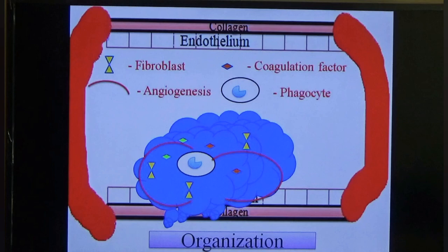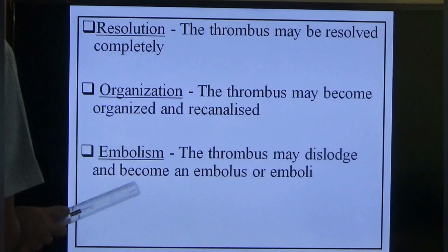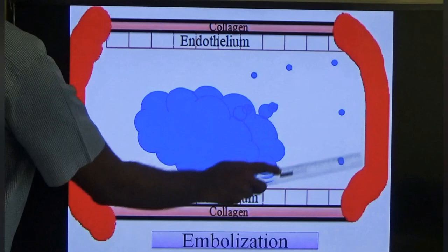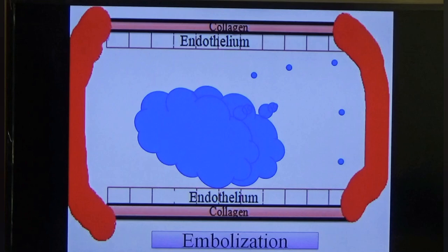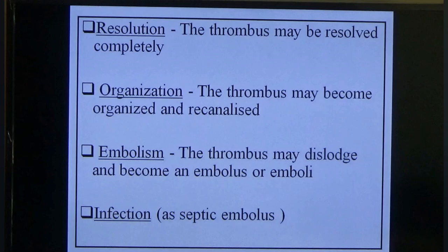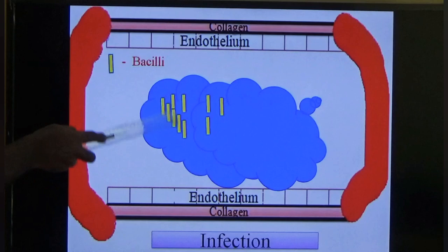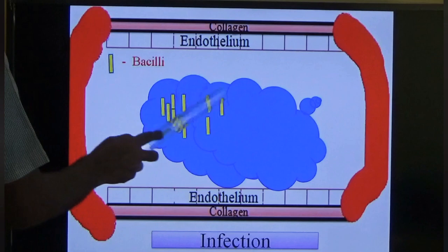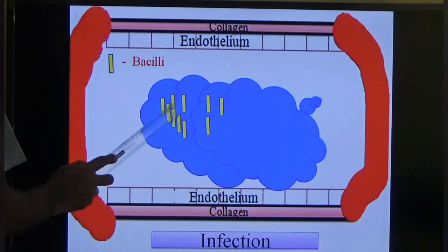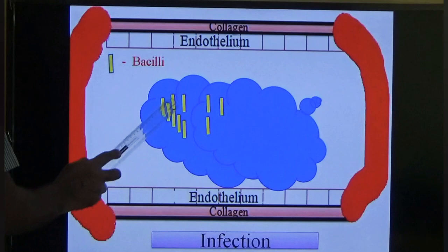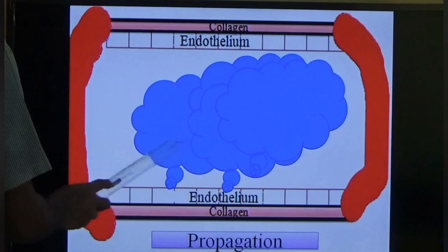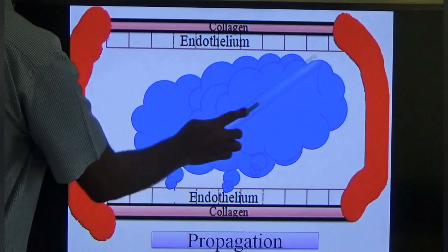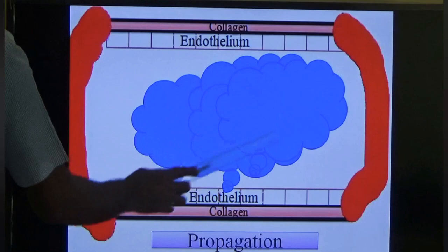Third fate: embolism — the thrombus dislodges and becomes an embolus or emboli (small pieces breaking off). This is a very dangerous phenomenon to be discussed in the next class. Fourth fate: infection — microorganisms accumulate in the thrombus (which consists of clotting factors and proteins that support microbial growth), leading to an infective thrombus. Fifth fate: propagation — the thrombus attracts more platelets and coagulation tissue, increases in size, and extends to other parts of the blood vessel.